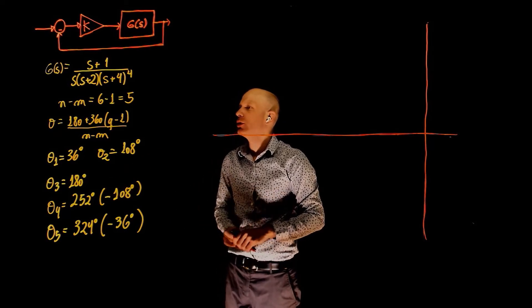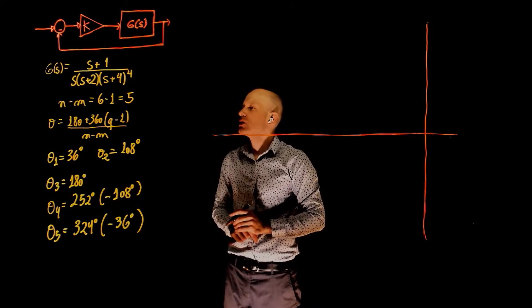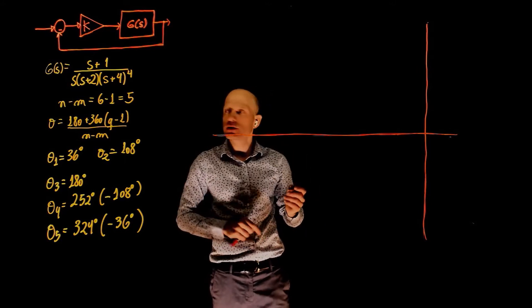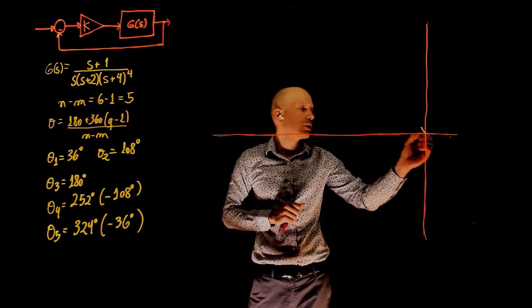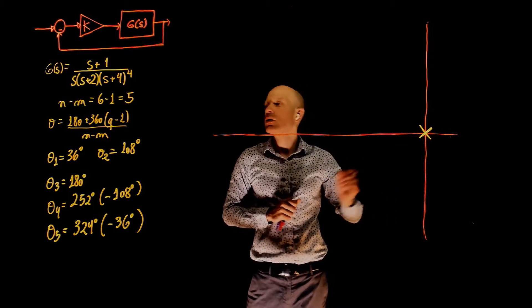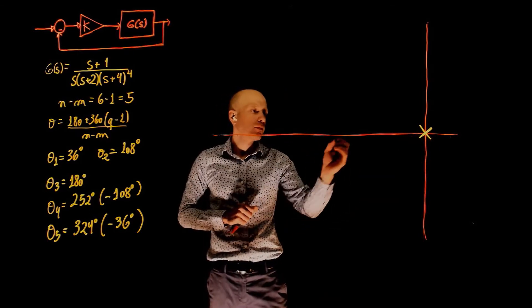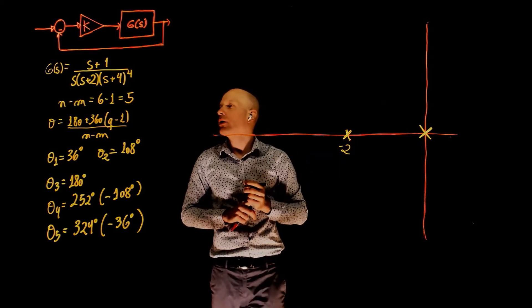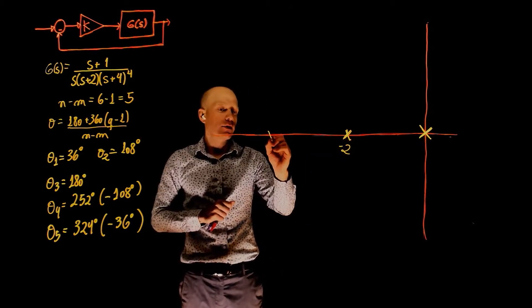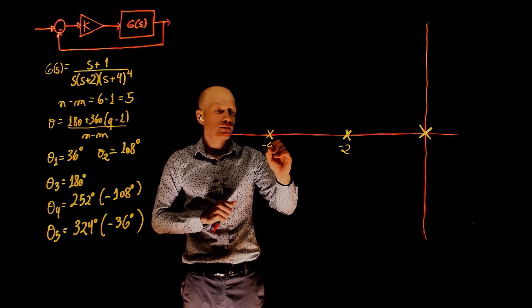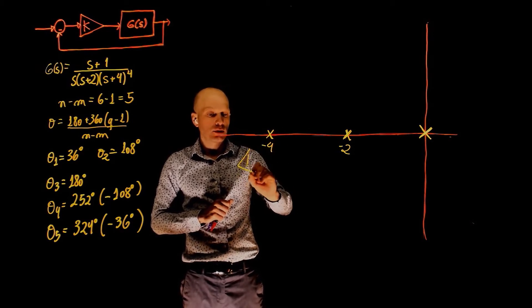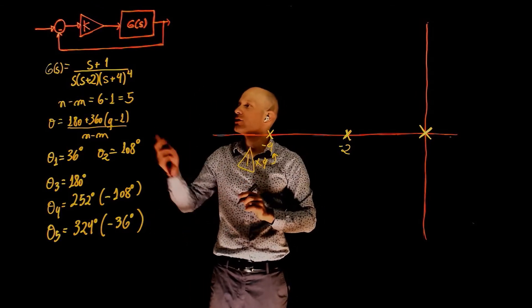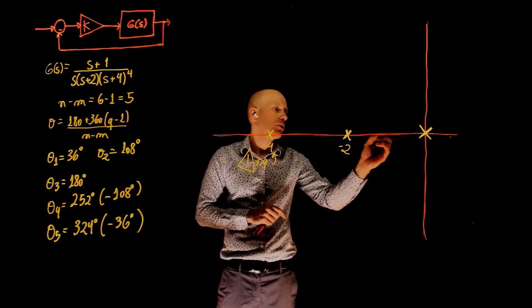This is symmetric with respect to the real axis. Now let's place the poles and zeros on the s-plane. We have a pole at 0, a pole at negative 2, four poles at negative 4 — so that position is marked times 4 — and a zero at negative 1.